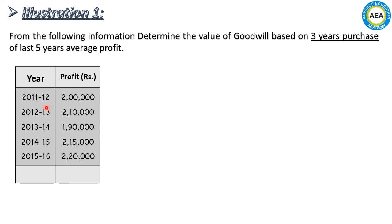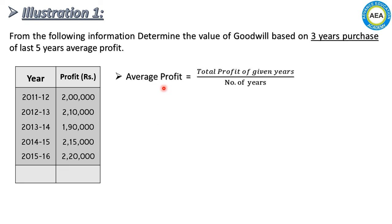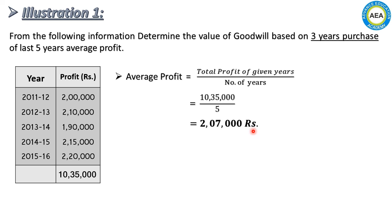Here we are given five years of profit: ₹2,00,000; ₹2,10,000; ₹1,90,000; ₹2,15,000; and ₹2,20,000. The number of years of purchase is three years. First we find average profit. Total profit of the five years is ₹10,35,000. Average Profit = ₹10,35,000 ÷ 5 = ₹2,07,000.